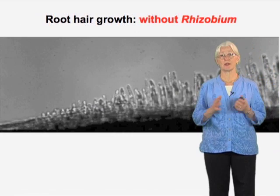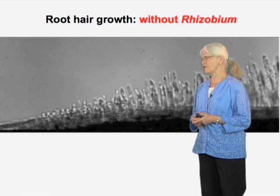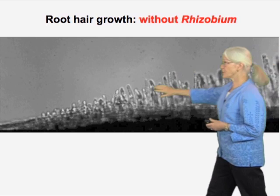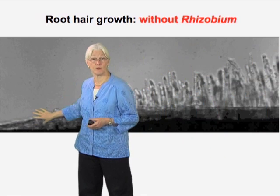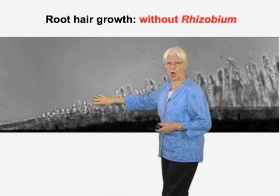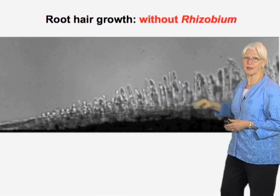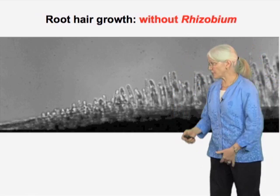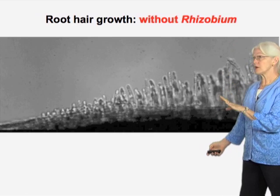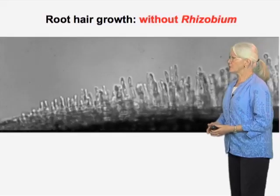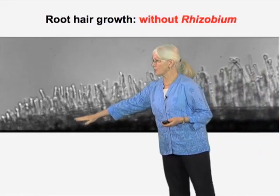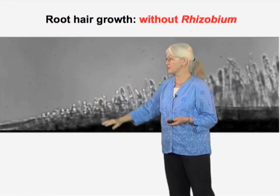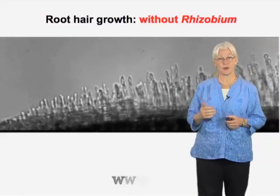I'd now like to show you something about the dynamics of how rhizobium affect plants. On a root, the youngest part is here and you can see they don't have any root hairs yet. The root hairs get longer, and over here they're full size — they get to a particular size and then stop. Let's watch in this movie to see how root hairs elongate normally, without rhizobium. They start, grow, reach a mature length, and stop — growing fairly straight throughout.